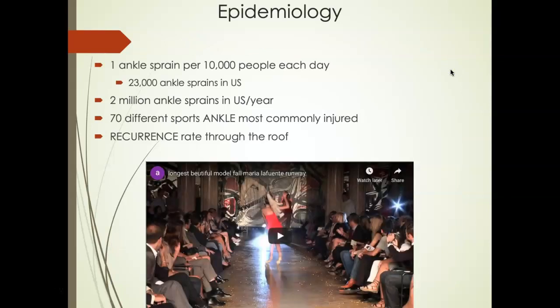We'll start with the epidemiology of ankle sprains. There's about one ankle sprain per 10,000 people each day in the United States, which equates to about 23,000 ankle sprains per day. That's an alarmingly high rate. Yearly data shows about 2 million ankle sprains occur per year in the United States, and at least 70 different sports reported ankle injuries as the most commonly injured joint. So you're going to see an ankle sprain at some point in your clinical career.